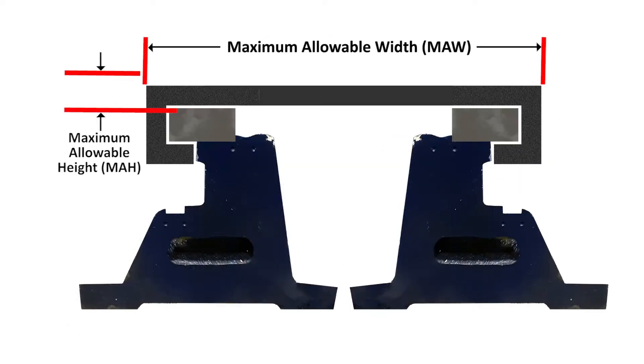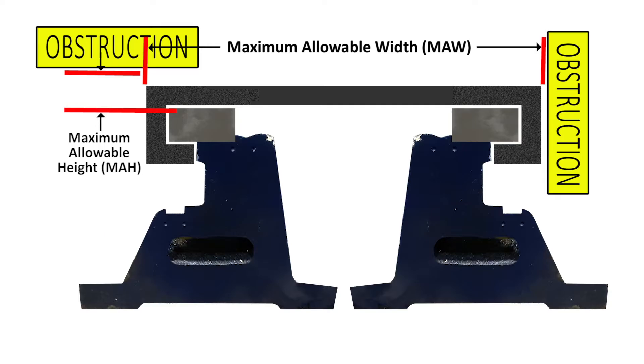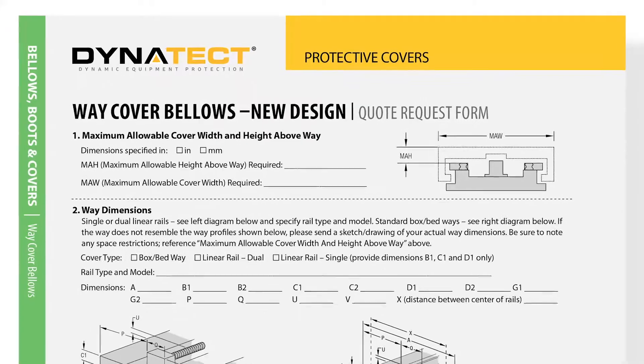The maximum allowable height and maximum allowable width for the bellows is determined by the closest obstacle to the way from any direction. You can specify this in section one of page two.